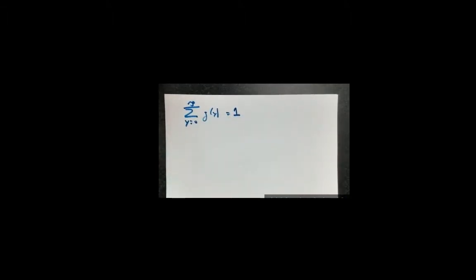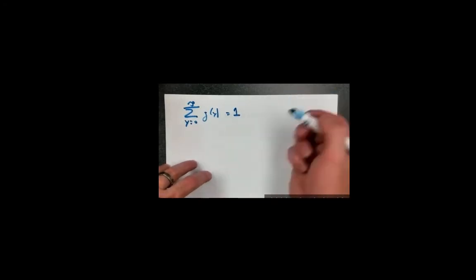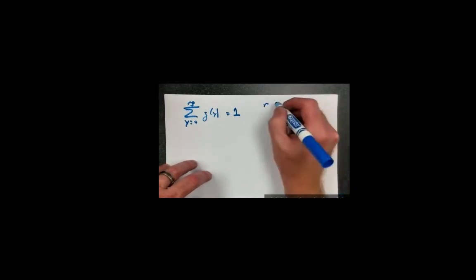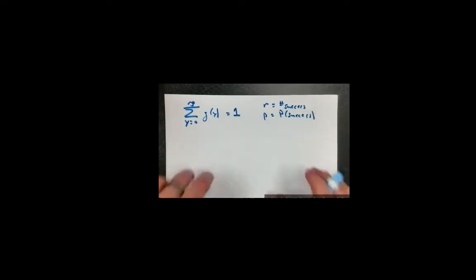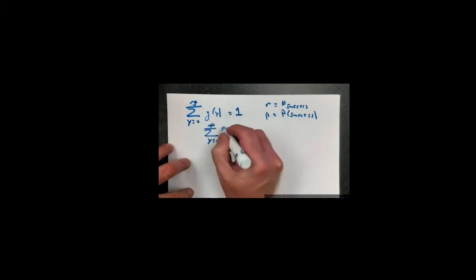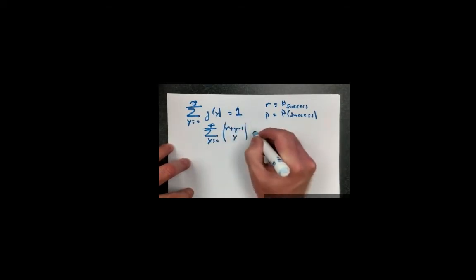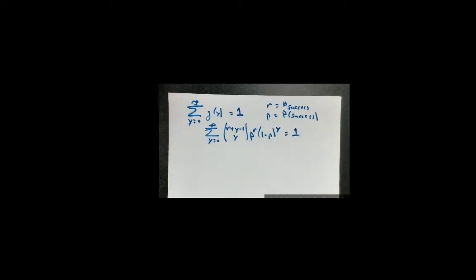To reiterate: Y is the number of failures observed before the rth success, with parameter r (number of successes) and p (probability of a success). We know that the sum from y equals 0 to infinity of g(y) equals 1. That means the sum from y equals 0 to infinity of (r plus y minus 1 choose y) times p to the r times (1 minus p) to the y equals 1. That's a fact we will take advantage of.